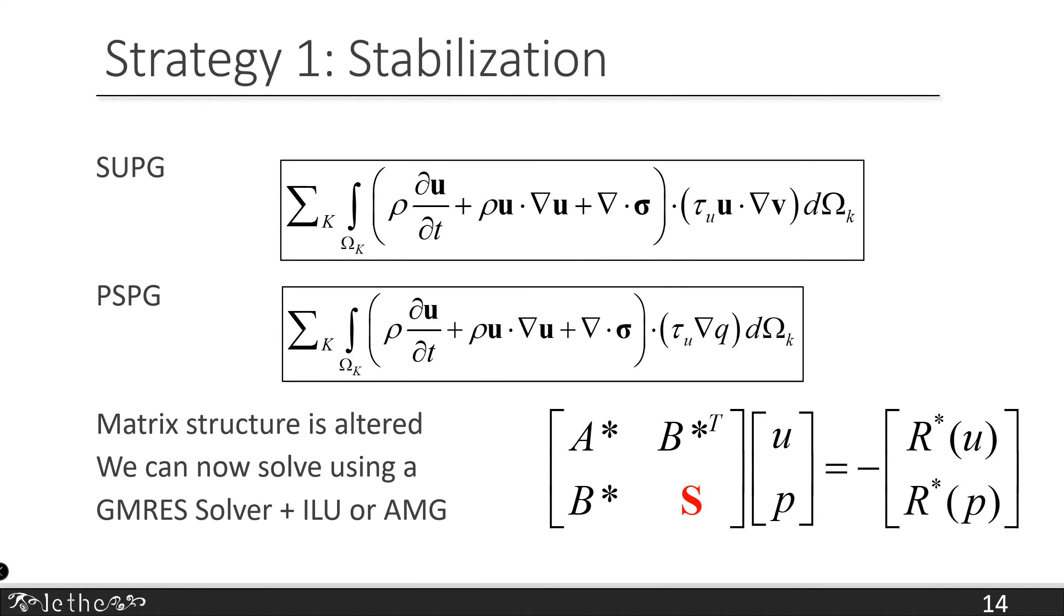The strategy we use is to use stabilization. We introduce two stabilizations: one in the momentum equation which is a SUPG stabilization, and another in the continuity equation which is a PSPG stabilization. These are both Petrov-Galerkin approaches and they transform or break the symmetry of your Galerkin scheme. One consequence is the matrix structure is altered. The A, B transpose, and B blocks are altered by the stabilization. What's also interesting is you have a new block which is non-zero, the S block, due to the PSPG stabilization. There's a pressure-pressure coupling that arises. It's not the best condition number, but with it we can now use with relative ease a standard GMRES solver with a black box preconditioner, either an incomplete LU factorization or algebraic multigrid method.